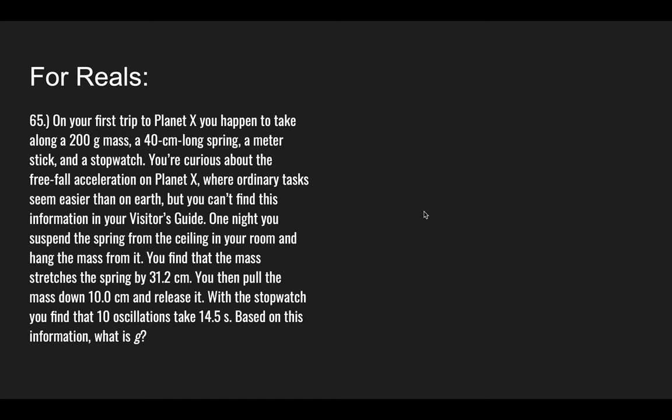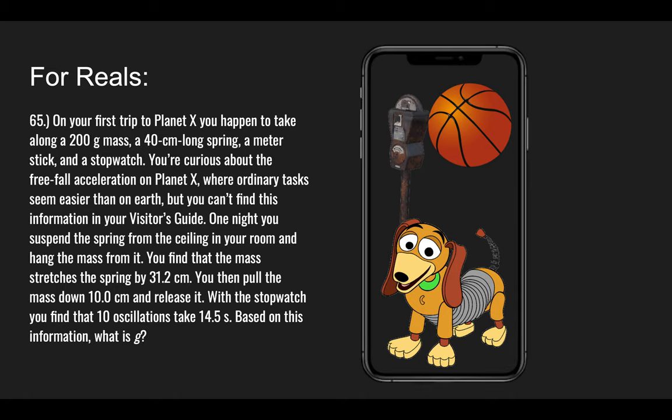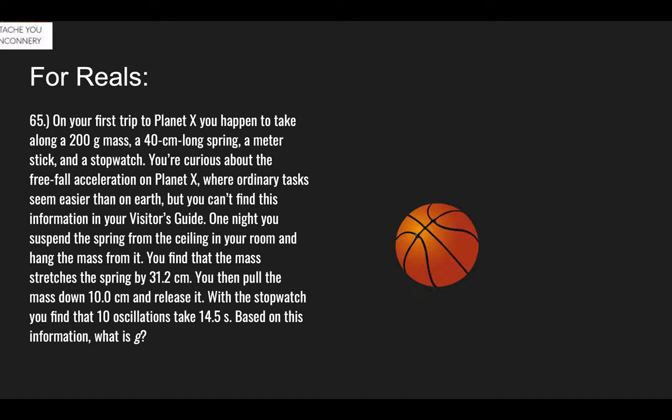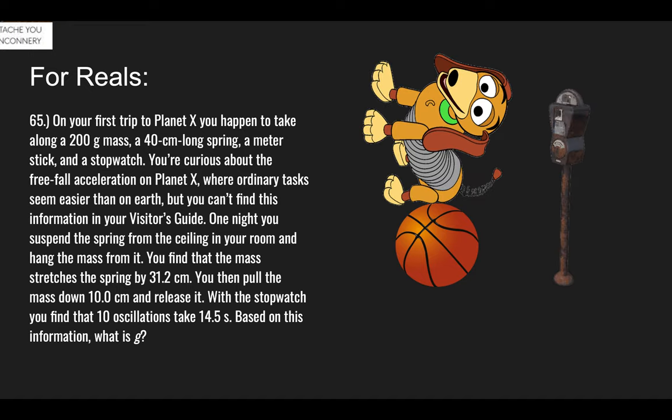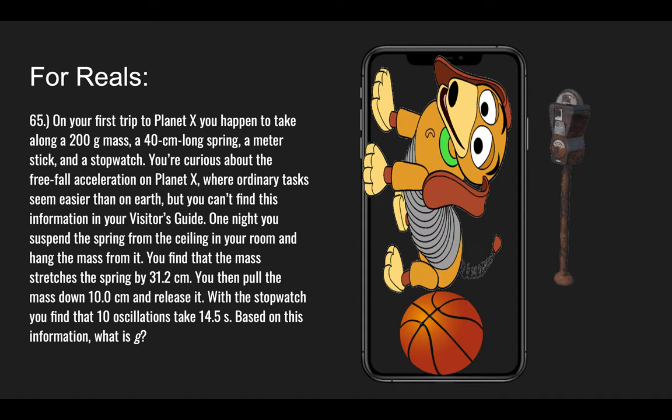Now for reals. So here goes the question. On your first trip to Planet X, you happen to take along a 200 gram mass, which is gonna be represented by this ball right here, and you take a 40 centimeter long spring, which is gonna be this one, and a meter stick and a stopwatch. But since we're in the 21st century, we're gonna use the iPhone. Basically, one night you suspend the spring from the ceiling and you measure it with your meter stick and then time it with your phone. When you put it on there, you see that the ball stretches out the spring by 31.2 centimeters. Then you pull the mass down another 10 centimeters and release it. With the stopwatch, you find that 10 oscillations take about 14.5 seconds.